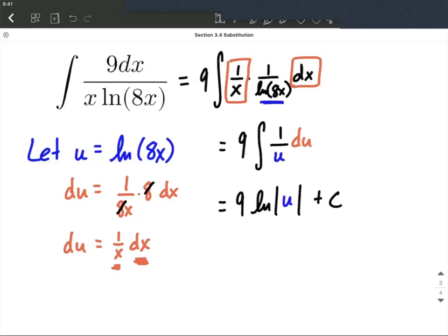So we're almost there to our solution. The only problem is we currently have a solution that has u's in it. Our original problem didn't have any u's. We kind of made up u along the way. So now, to finish this up, we're going to use that let statement, how we defined our u, and we're going to replace u with the natural log of 8x from the very beginning.